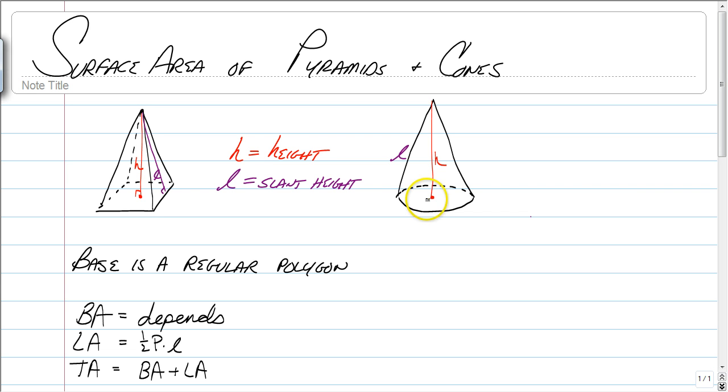So first let's talk about the two different heights. When you think about a pyramid, how tall it is, is represented from top to bottom, straight up and down. Now in a pyramid and a cone, that's going to be top to bottom, that's going to be a vertical measurement, but that's the inside height of the pyramid or cone.